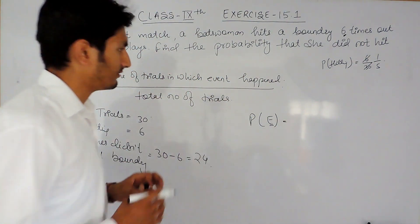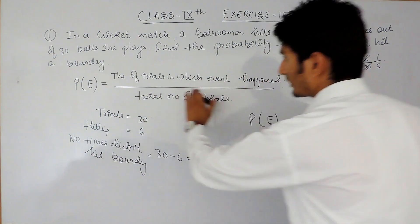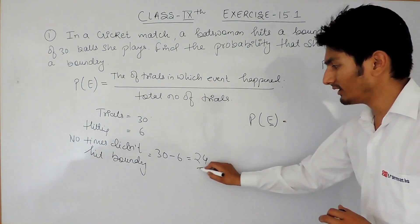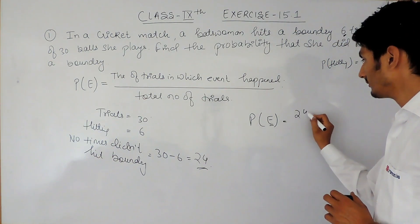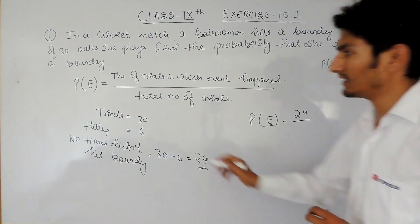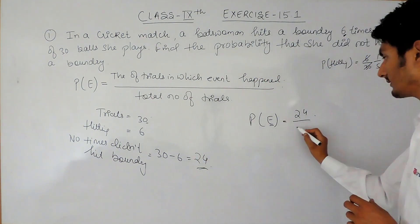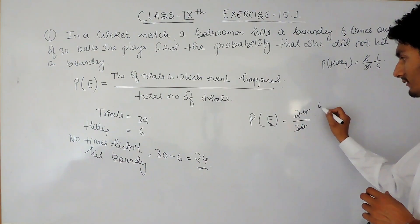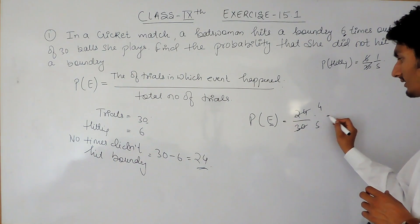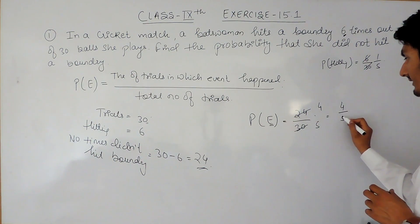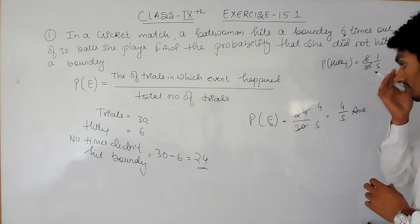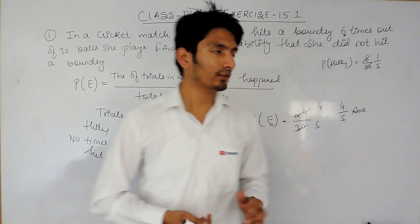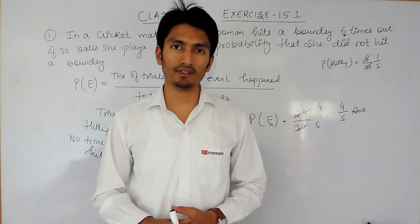The probability that she did not hit a boundary equals the number of trials in which the event happened, which is 24, divided by the total number of trials, which is 30. Simplifying, we get 4 upon 5 as the answer. So 4/5 is the probability of this batswoman not hitting a boundary.